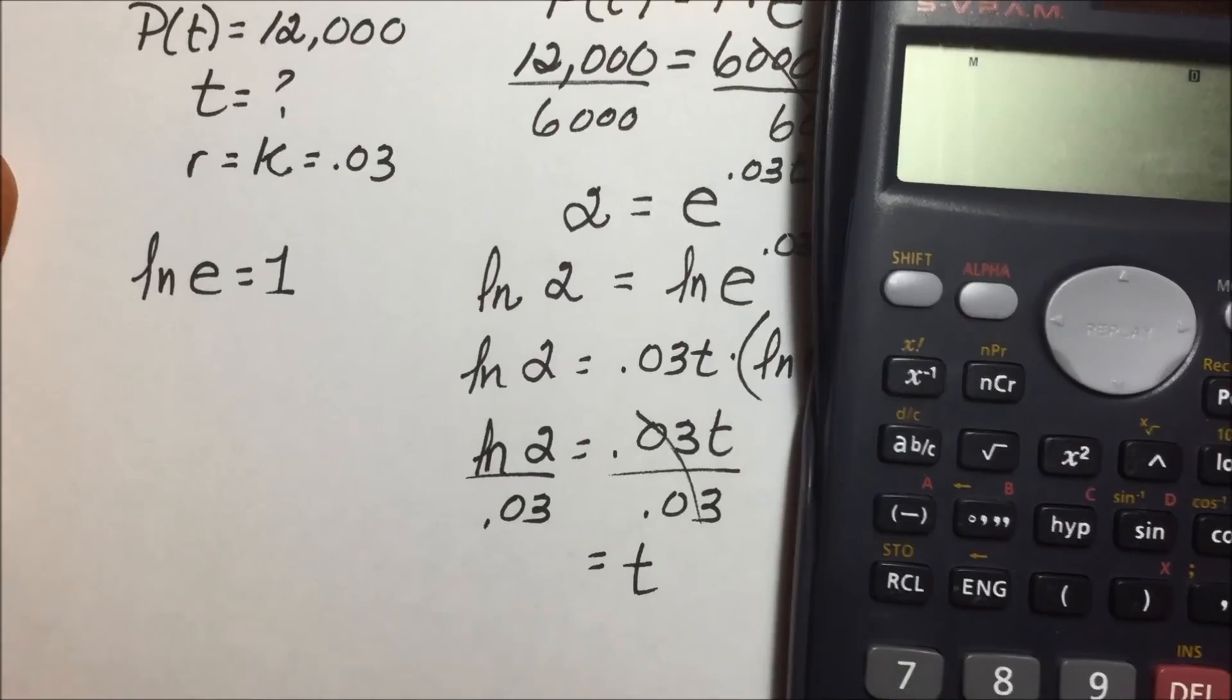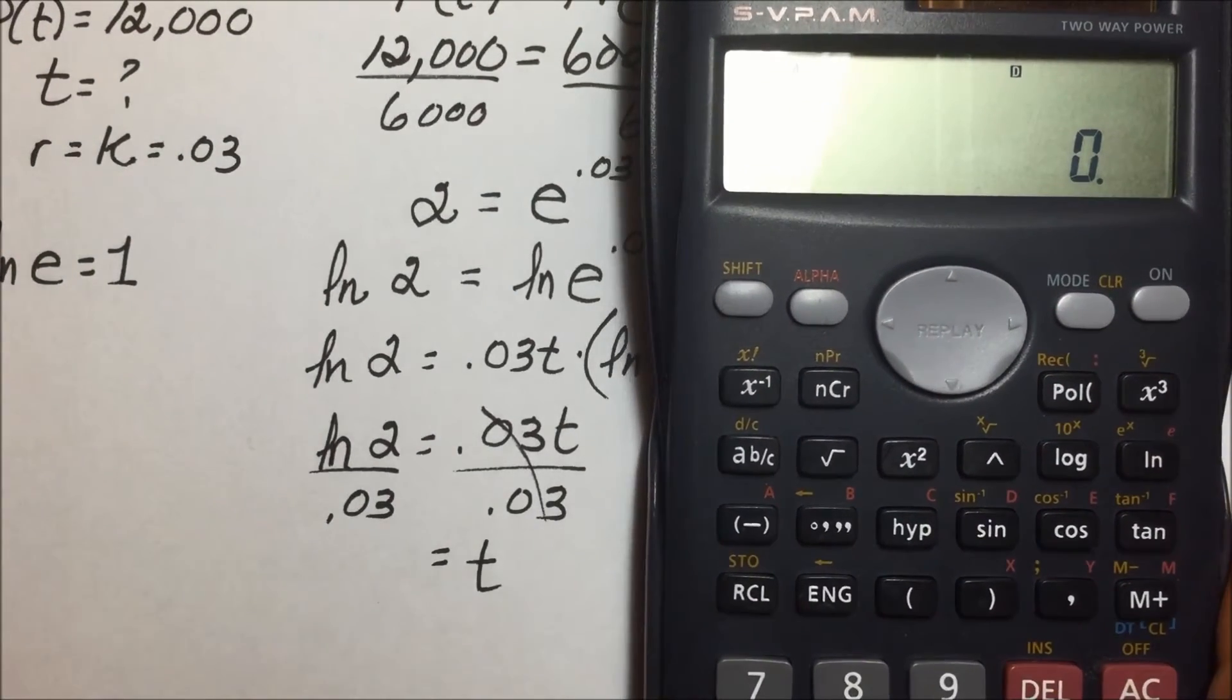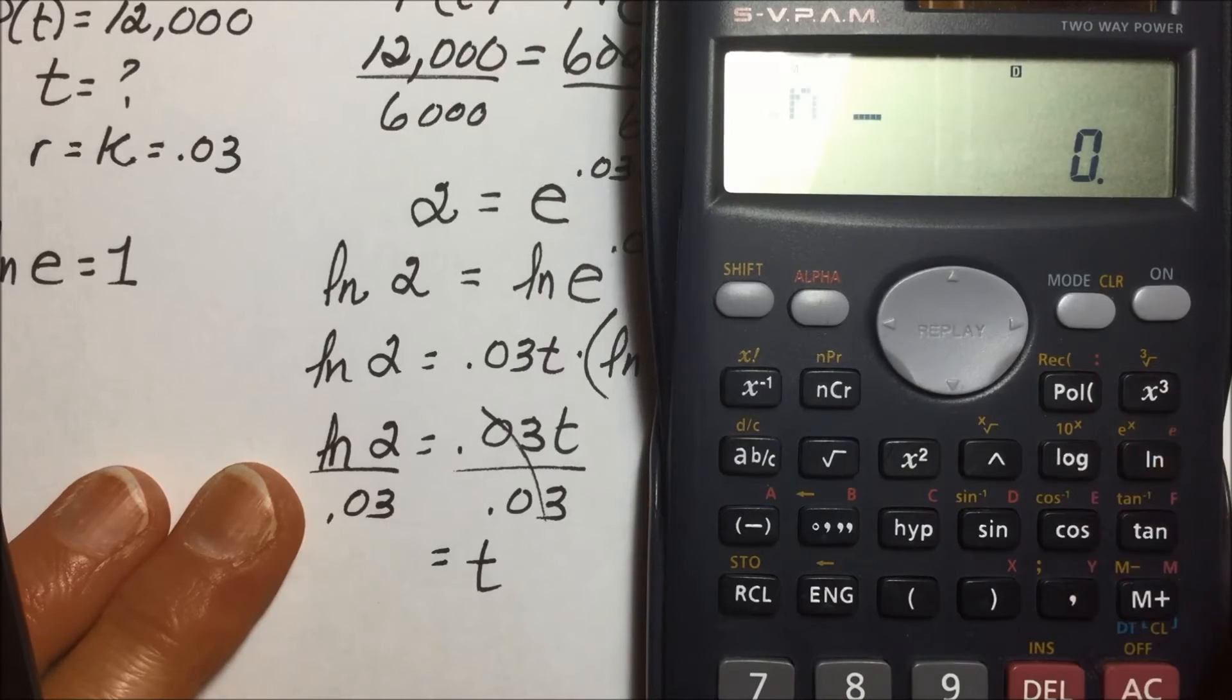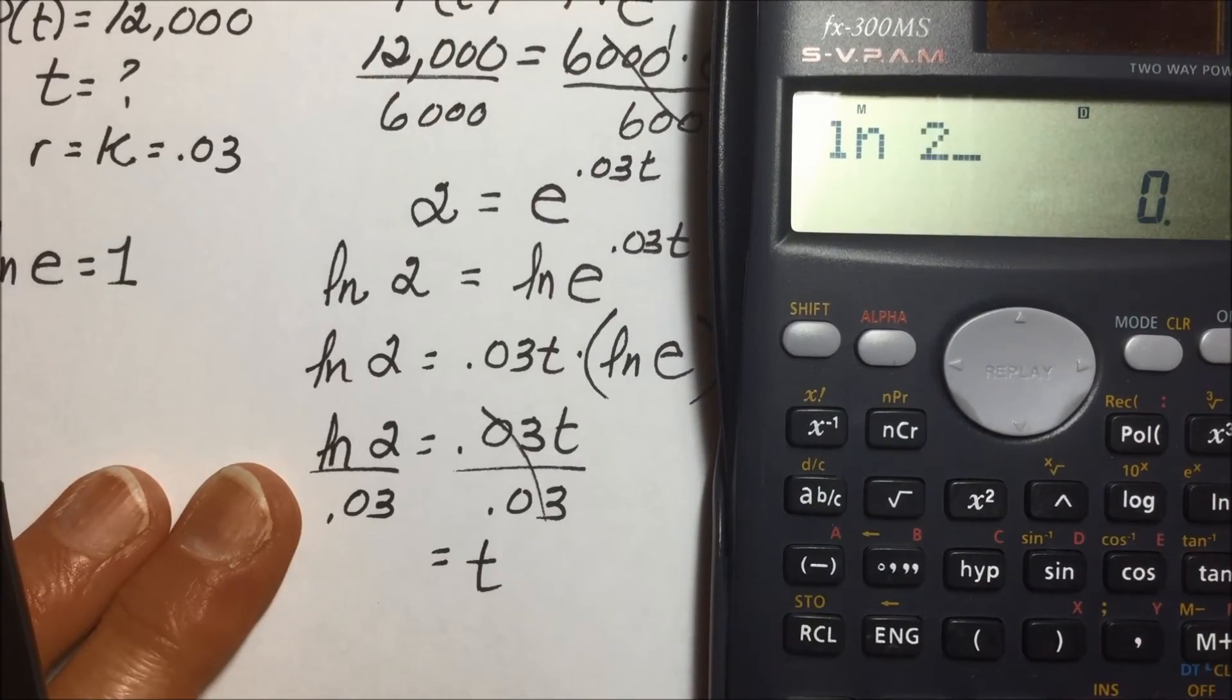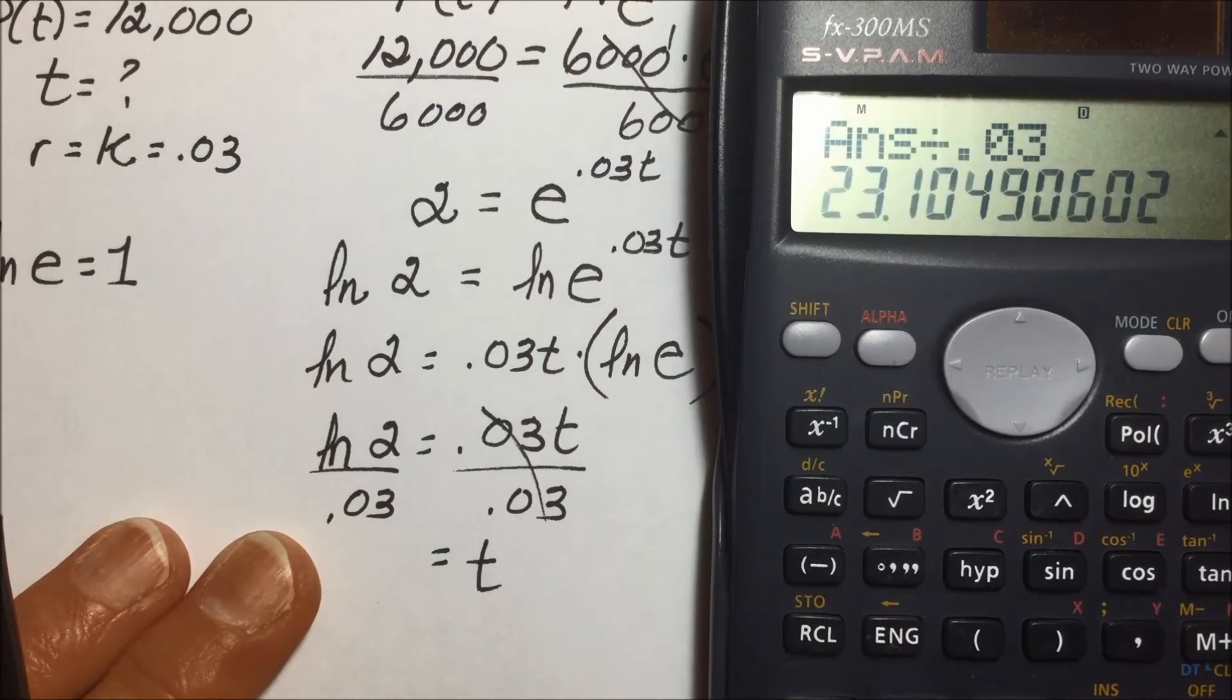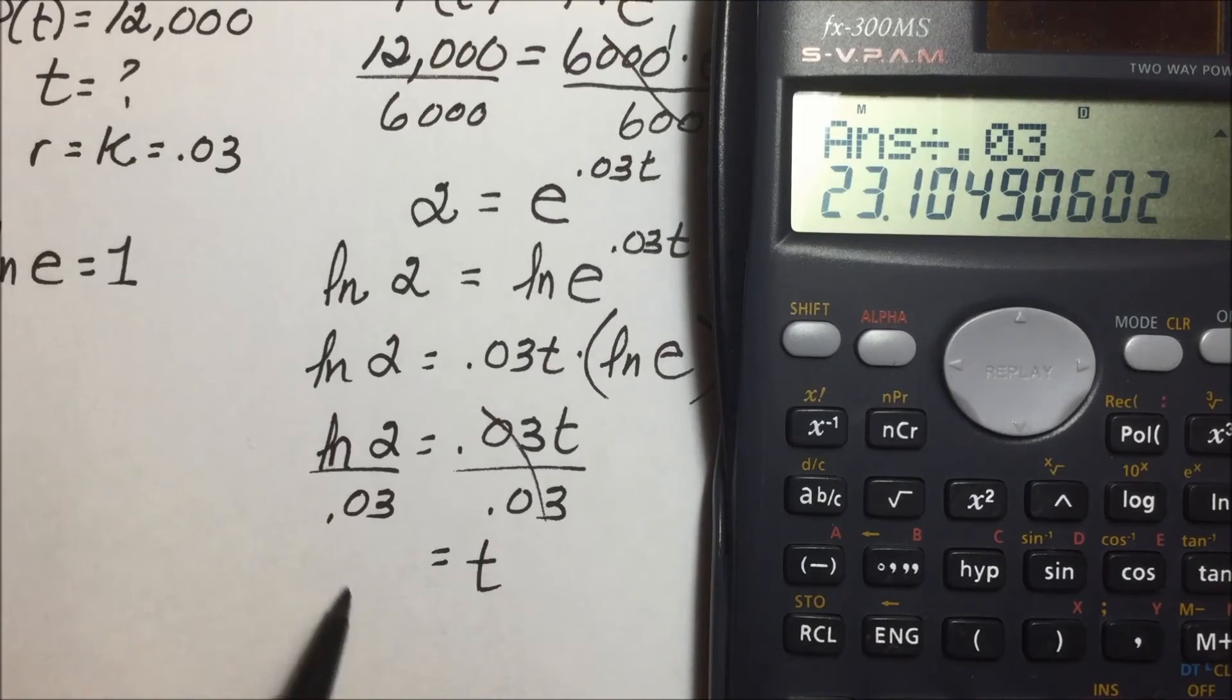But to finish off this problem, we're going to take the natural log of 2, so tap the ln of 2, we've got a little glare there. Find its value, divide it by the denominator of 0.03, which results in approximately 23.1 years. An investment of $6,000 should compound to $12,000 if it's compounding continuously at 3% annual rate.